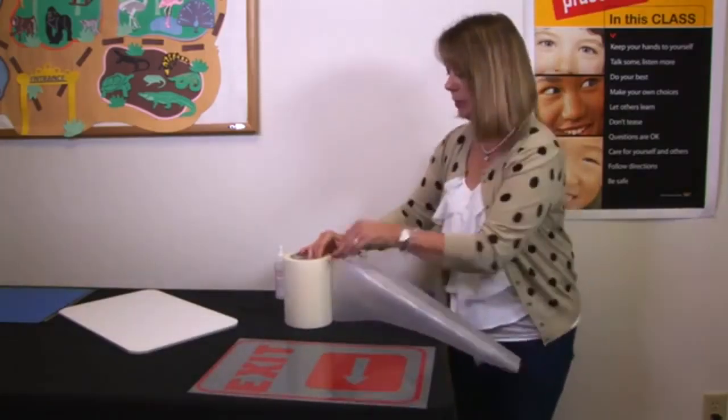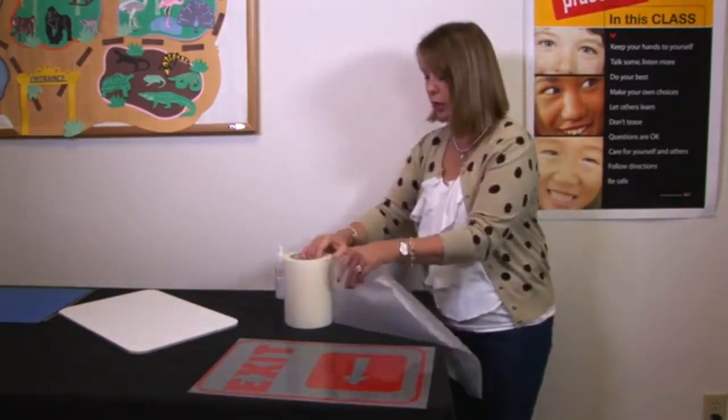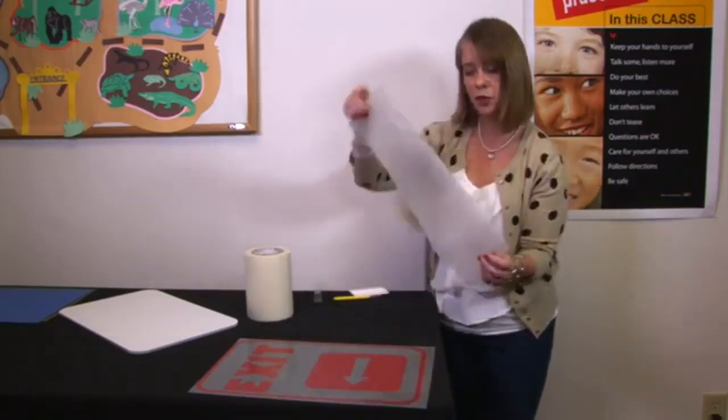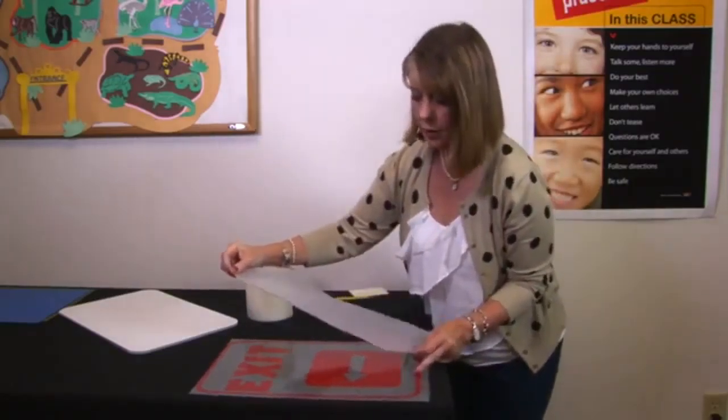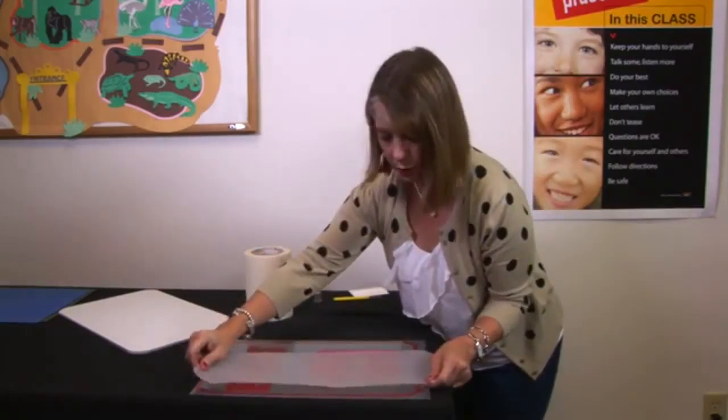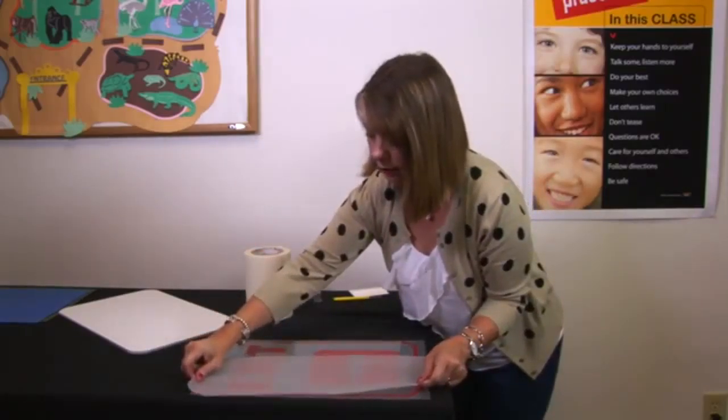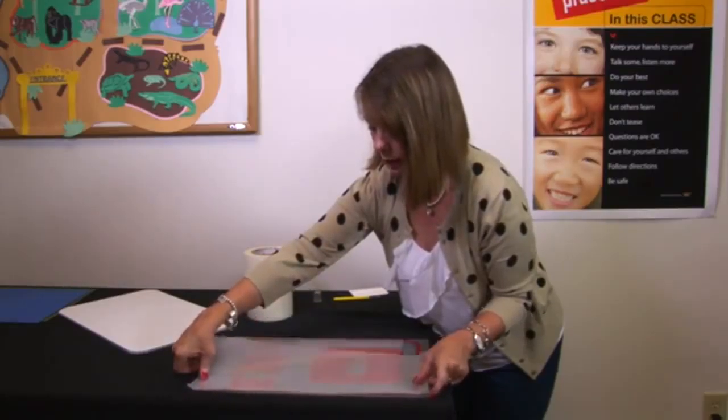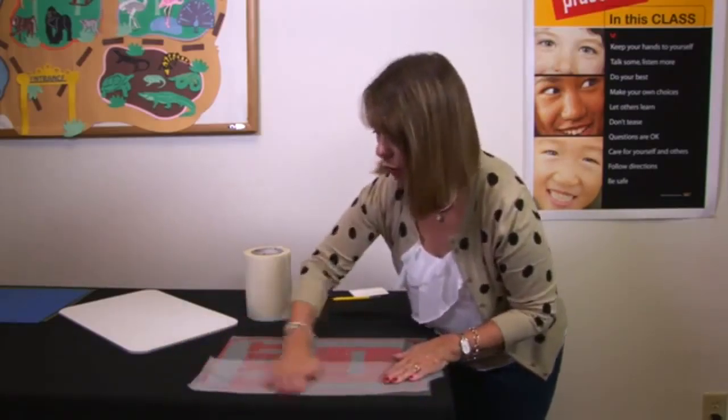This transfer tape is such where you don't need scissors. You can just rip it right off. Take the first strip and just lay it flat onto your sheet of vinyl. And then you can smooth it down with your hand.